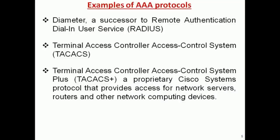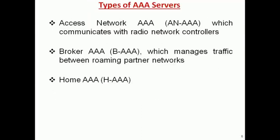Some examples of Triple-A protocols are given here — these protocols are used for Triple-A services. Types of Triple-A servers: the first is Access Network Triple-A, which communicates with radio network controllers. Broker Triple-A, also known as Triple-A-B, manages traffic between roaming partner networks. Home Triple-A is known as H Triple-A. This concludes the topic of Triple-A servers.